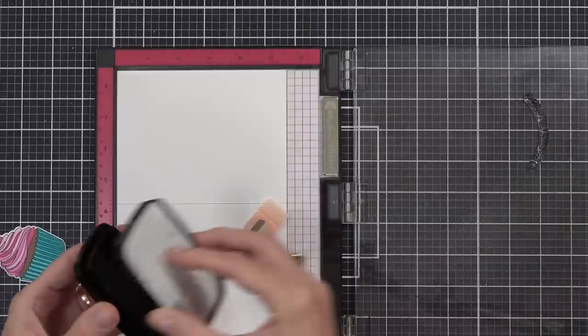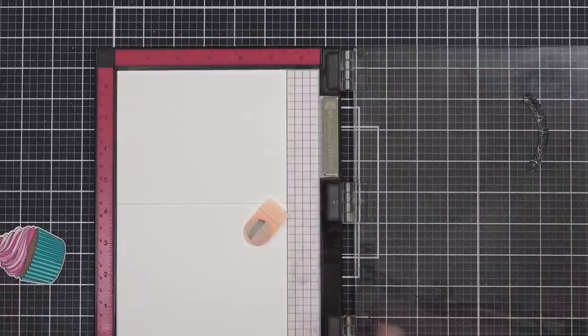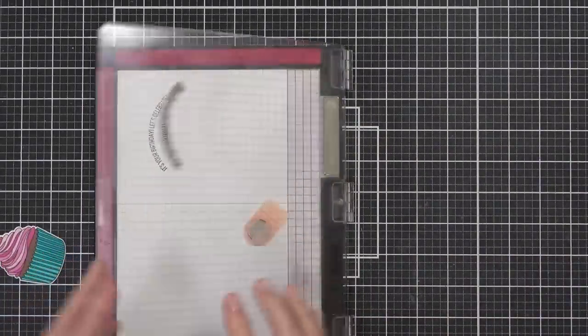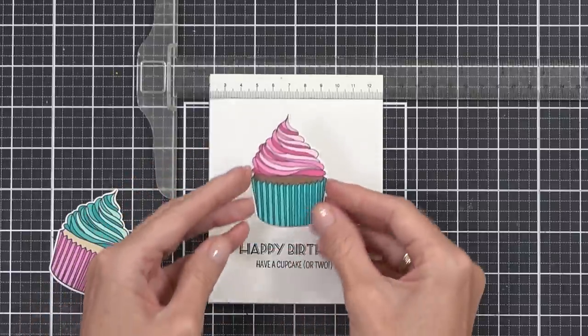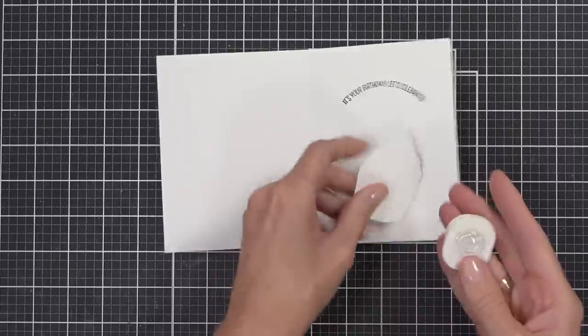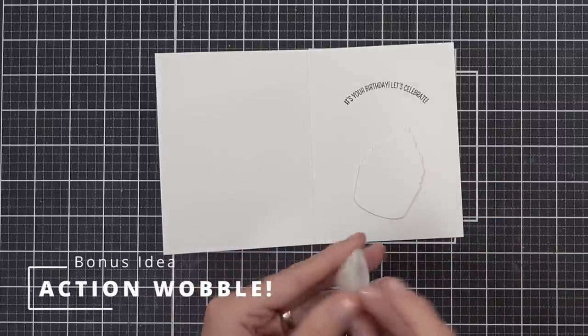I'm doing some stamping both on the front of the card and on the inside of the card. Here I've popped up one of the cupcakes on the front of the card, but the image on the center is going to get an action wobble. Yes!